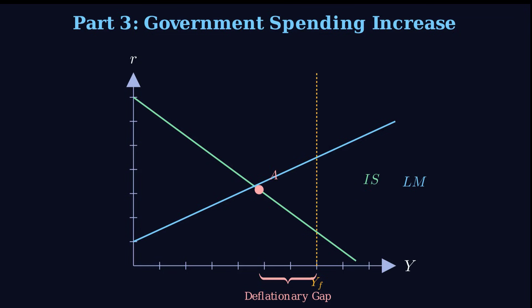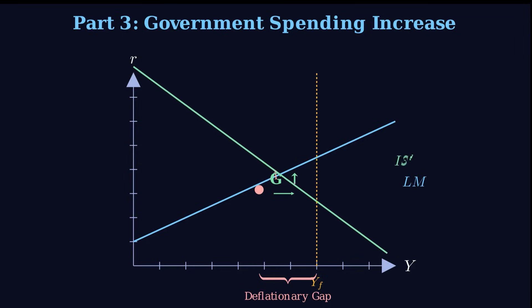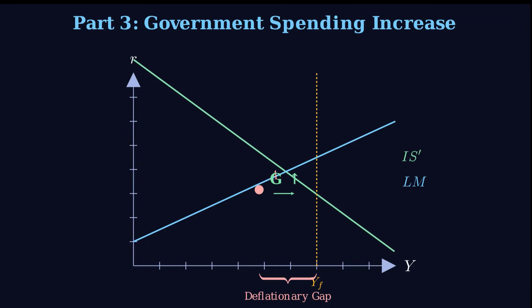We've established that both output and the interest rate went up. The output part is straightforward — the government is spending more money. But let's dig into that interest rate outcome. Most people hear 'government borrows money' and assume the act of borrowing is what drives rates up. That's a really common distinction to make. The core mechanism that drives the interest rate up in the IS-LM model is all about the money market — it's about the boom that follows the spending. We have to focus on the LM side: liquidity preference and money supply. And remember, the money supply is fixed here — the central bank isn't doing anything.